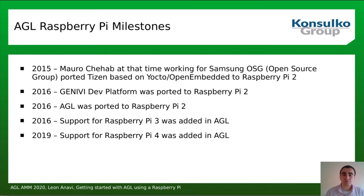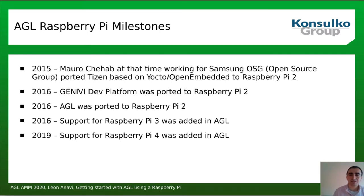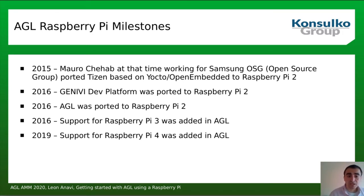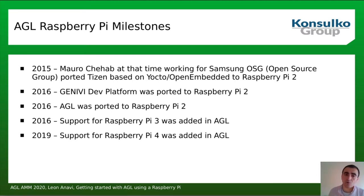Here are the milestones of Raspberry Pi support in AGL. Everything started five years ago in 2015 when Mauro Chenna, who was working for Samsung Open Source Group, ported Tizen based on Yocto and OpenEmbedded for Raspberry Pi 2. Shortly after that I was the one who enabled AGL for Raspberry Pi 2, in 2016. In the same year the GENIVI Development Platform was also ported to Raspberry Pi 2. With each new Raspberry Pi release we tried to support it in AGL — in 2016 we added Raspberry Pi 3 support, and in 2019 we started supporting Raspberry Pi 4, which is today's recommended platform.